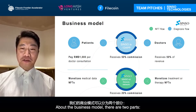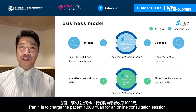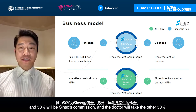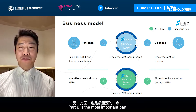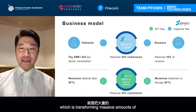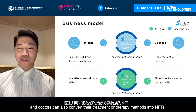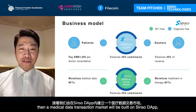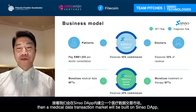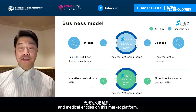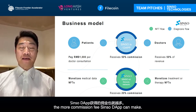About the business model, there are two parts. Part one: we charge patients 1,000 yuan for an online consultation session — 50% is CISA's commission and the doctor takes the remaining 50%. Part two, the most important part: transforming massive amounts of patients' medical image data into NFT assets, and doctors can also convert their treatment or therapy methods into NFTs. A medical data transaction market will be built on CISA DAP, and the more transactions between patients and medical entities, the more commission fees CISA DAP can earn.